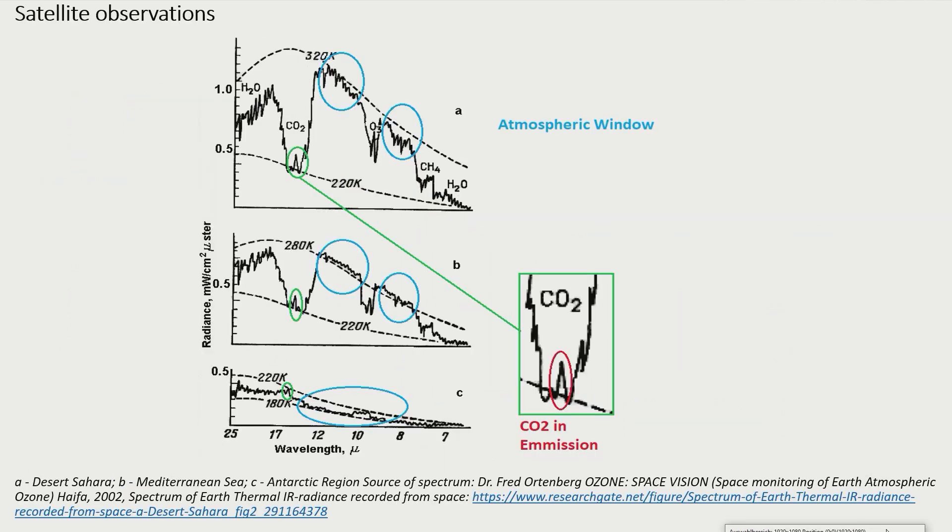Now let's see how well Hugs and Shula's theories fit to real-world satellite measurement of the Earth's thermal radiation into space. These graphs show infrared spectra of the Earth's emission into space. Spectrum A was measured over the desert Sahara, B over the Mediterranean Sea, and C over the Antarctic region.